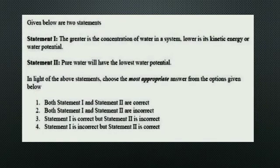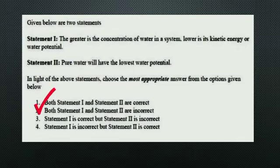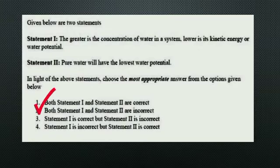The next question gives two statements. Statement 1: The greater the concentration of water in a system, the lower its kinetic energy or water potential. Statement 2: Pure water will have the lowest water potential. The right answer is Option 2 — both statements are incorrect — because greater concentration of water means higher kinetic energy or water potential, and pure water always has the greatest water potential.